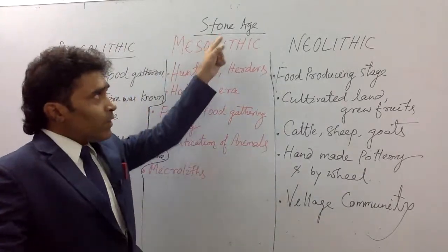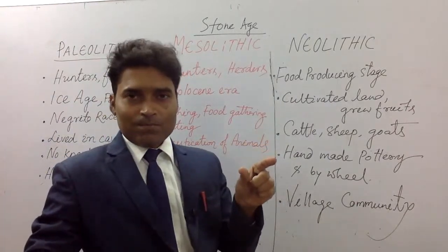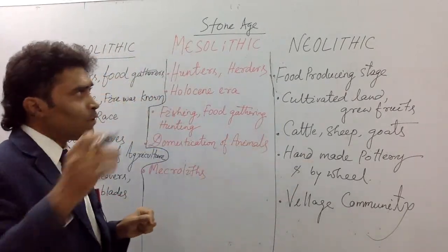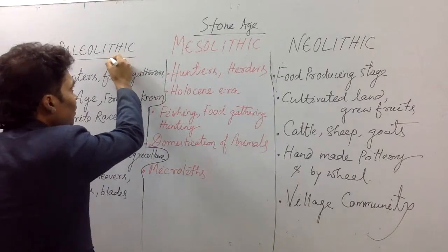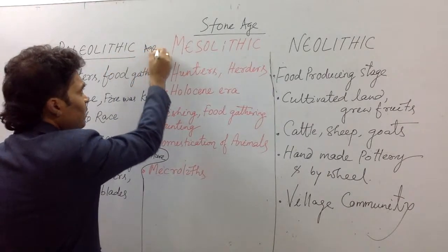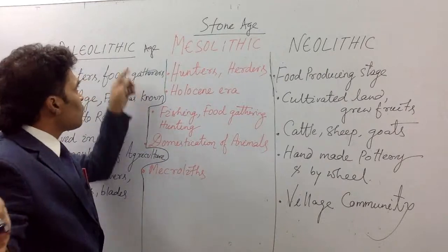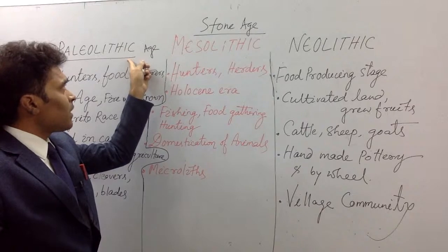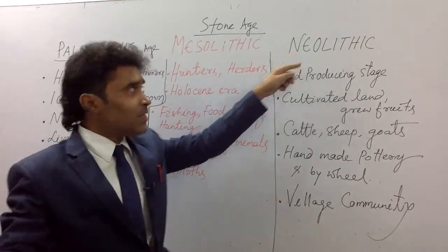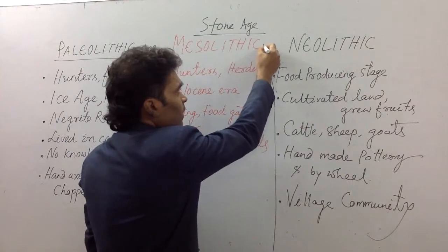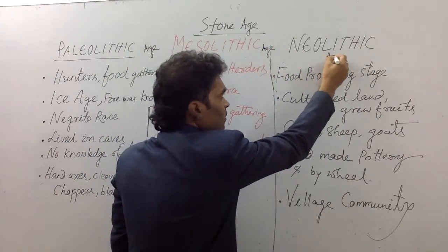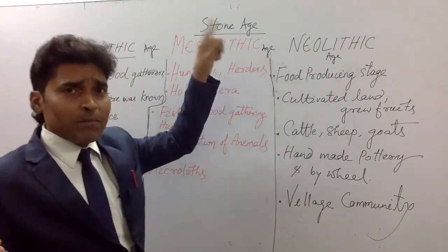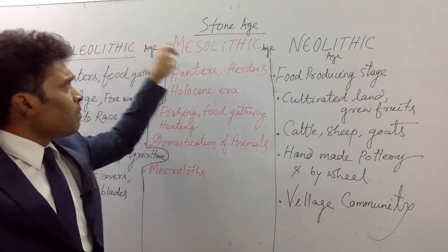The Stone Age is divided into three parts: Paleolithic age, Mesolithic age, and Neolithic age. We have to understand this. Paleolithic age — 'age' means era or time period. So Stone Age can be divided into three parts: Paleolithic age, Mesolithic age, and Neolithic age. If you are new to this, you should understand that 'age' means that particular time period.